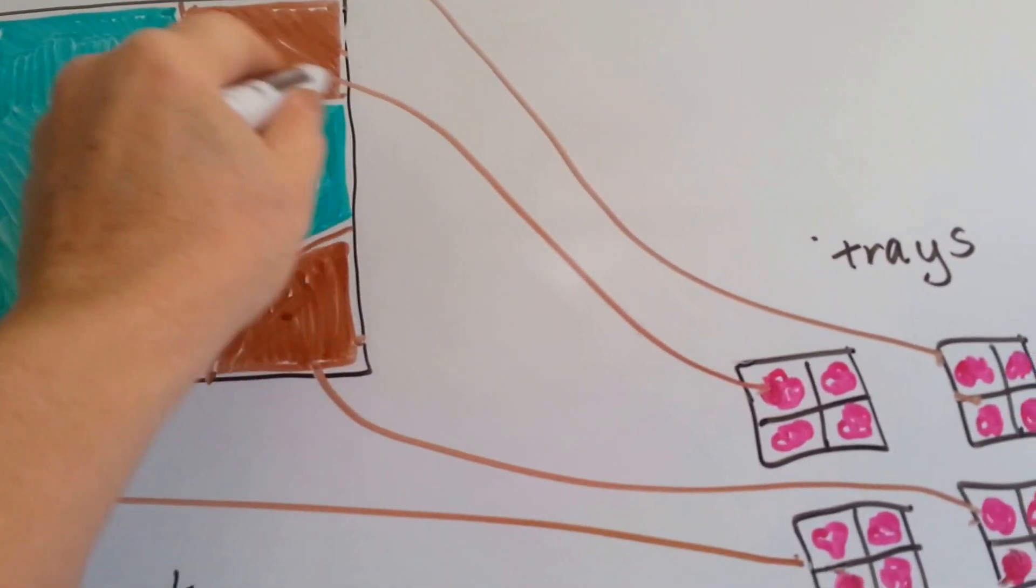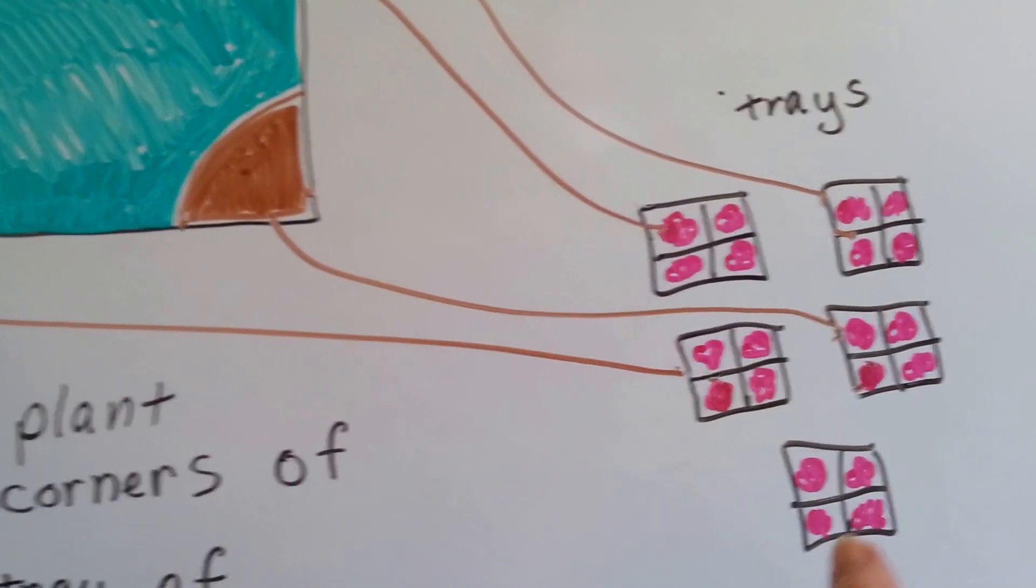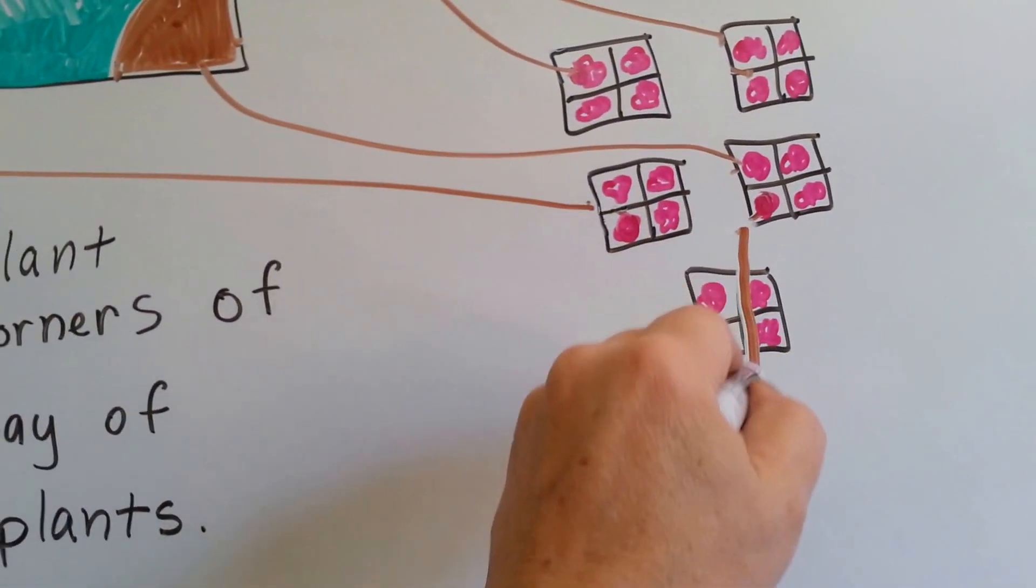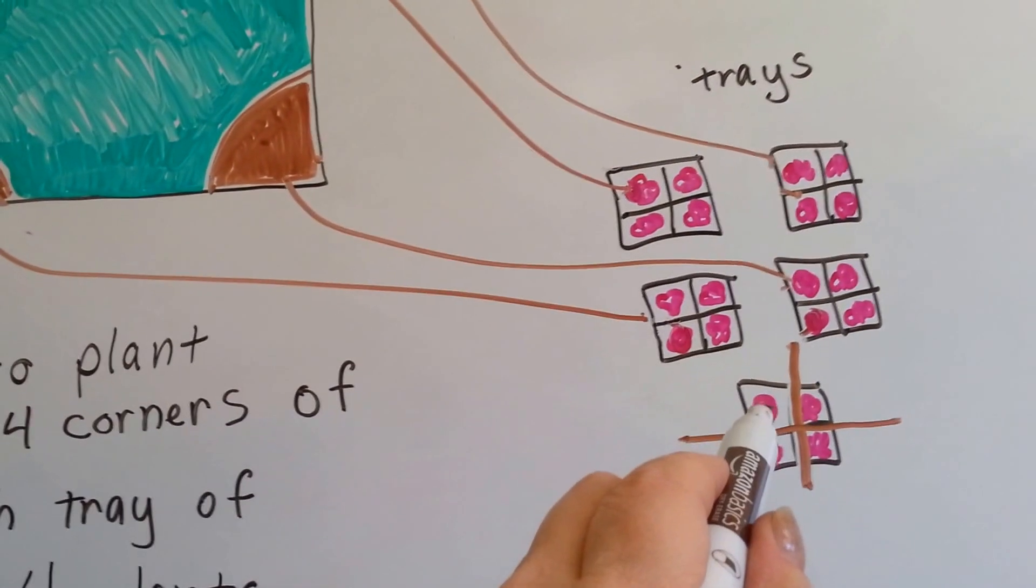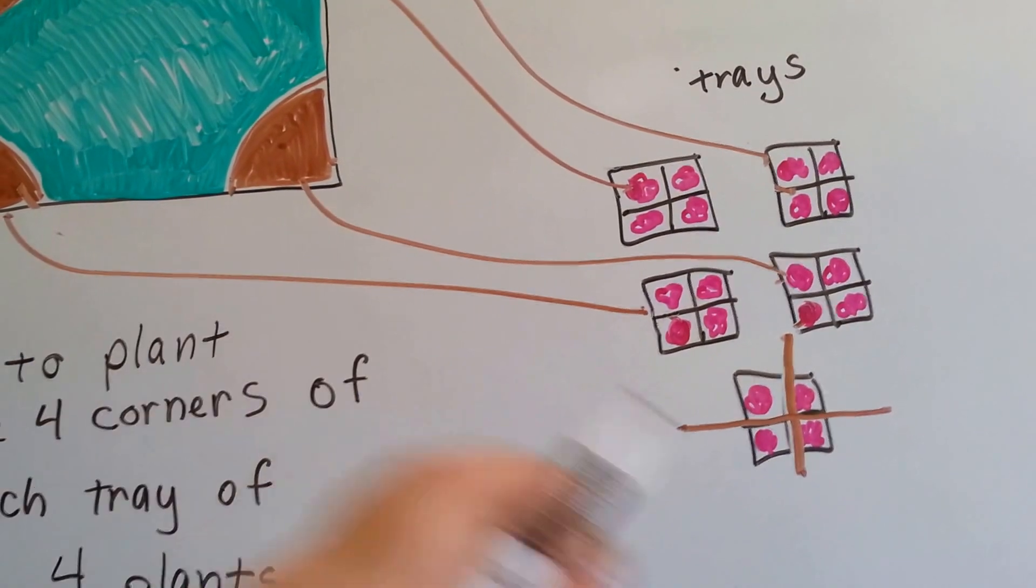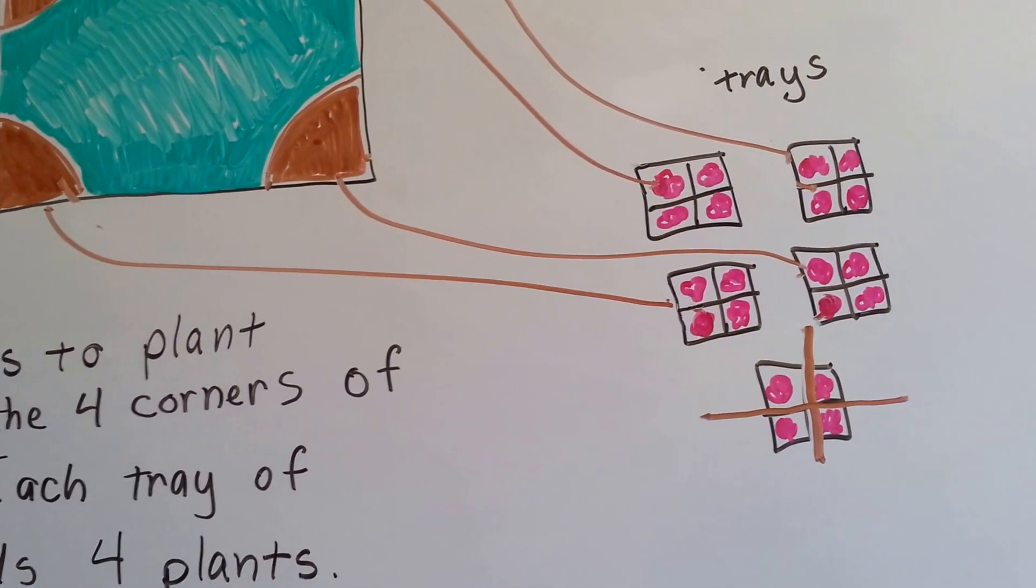She can plant this tray in this corner. But she's got one tray left over that she's going to split into four and put a fourth into each corner. See? So that each get one and one fourth.